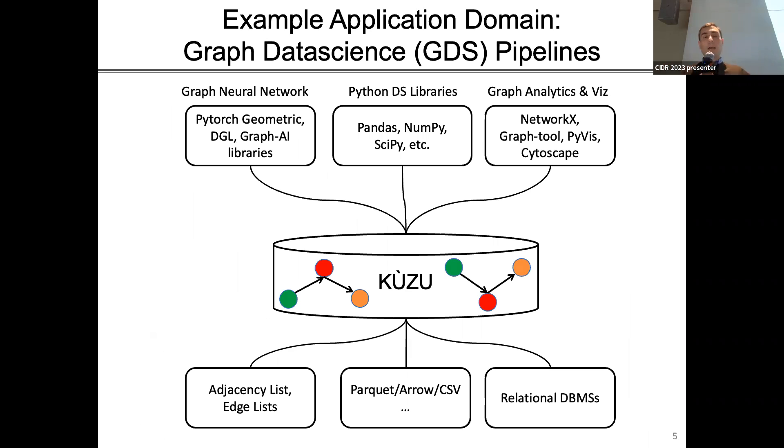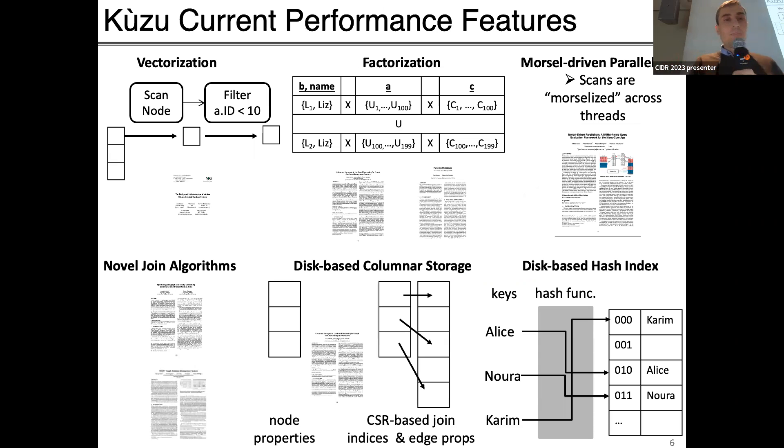An example application domain that we are targeting with Kuzu is to be essentially the database management system for pipelines that build graph analytics in the Python space. If you have records in raw formats, maybe in some graph specific format or common columnar formats like Parquet and Arrow, and you'd like to build pipelines where you want to model these records as a graph and transform, clean, and do operations on this all using a high level query language and push data to maybe a graph machine learning library like PyTorch Geometric or DGL, we'd like users to use Kuzu for this purpose.